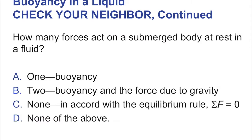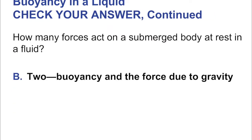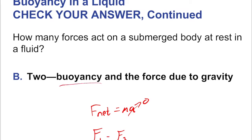How many forces act on a submerged body at rest in a fluid? Two — because you can't be at rest with only one force. Think F_net = ma: the only way for acceleration to be zero is for F_net = F1 − F2. You have the buoyant force pointing up and gravity pointing down. They're not a force pair since they both act on the same object, but they're equal and opposite — creating an equilibrium.